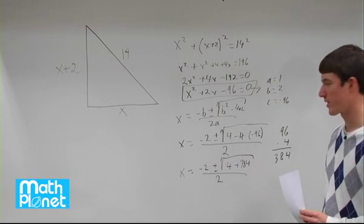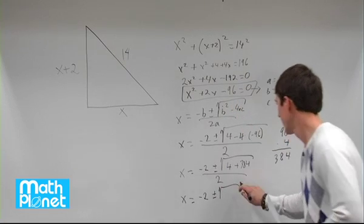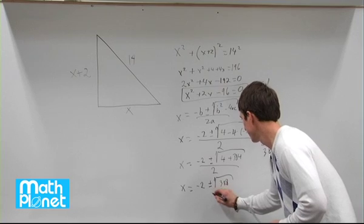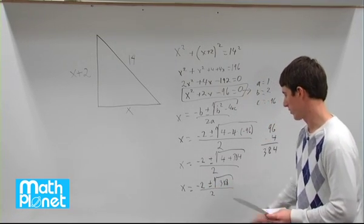We can finally simplify this a little bit more. x equals negative 2, plus or minus the square root of 4 plus 384 is 388, all over 2. And then we need to simplify this a little bit more.